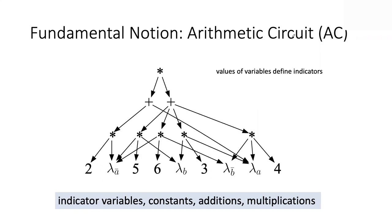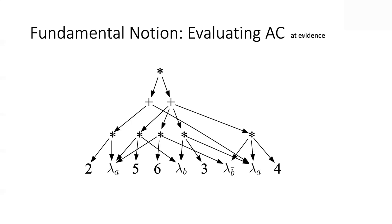We are now ready to provide our treatment, based on two fundamental notions and three fundamental questions. The first fundamental notion is the arithmetic circuit, or AC. We've looked at this as a byproduct of a pipeline — the end result involving many components. Now we're going to start with this as a starting point. We will define an AC as simply a computation graph that has constants and indicators as inputs, and then multipliers and adders. Your variables define these indicators.